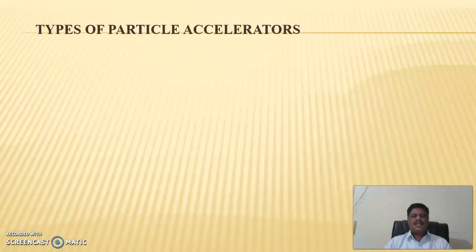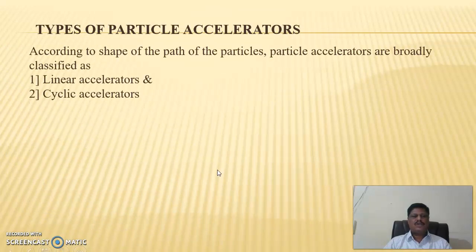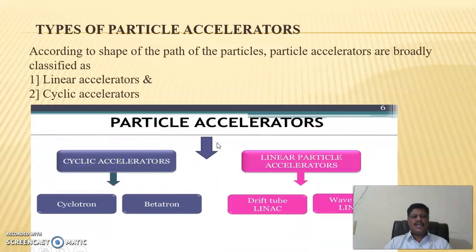What are Linear Accelerators, or before that, types of particle accelerators? There are two types of particle accelerators according to shape of the path of the particles. First one is Linear Accelerators and the second one is Cyclic Accelerators. Linear Accelerators are two types: Drift Tube LINAC and Wave Guide LINAC. But in this video we will discuss Drift Tube LINAC. The second particle accelerators are cyclic accelerators, which include cyclotron and betatron. In linear particle accelerators, the particle is accelerated linearly along a straight line path. In cyclic accelerators, the charged particles move in a circular path.